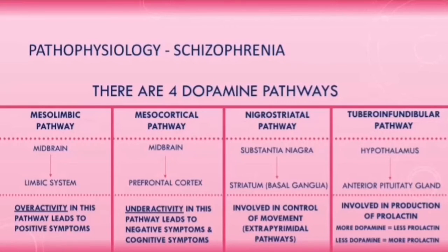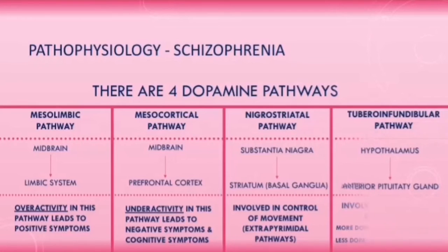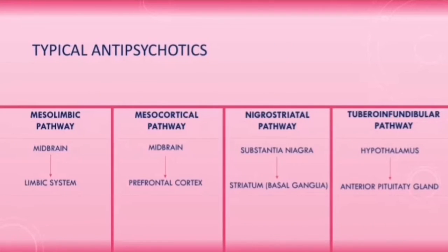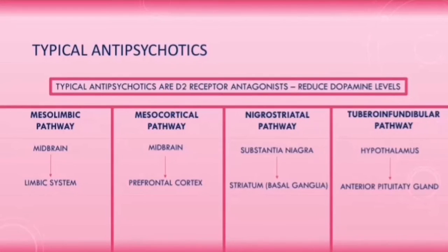Typical antipsychotics are D2 receptor antagonists, which means they reduce dopamine levels. They reduce dopamine levels in all four dopamine pathways.